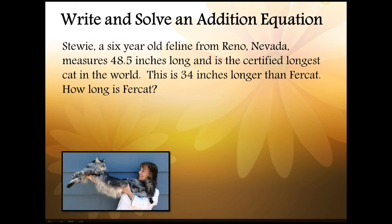Stewie, a six-year-old feline from Reno, Nevada measures 48.5 inches long and is the certified longest cat in the world. This is 34 inches longer than Fercat. How long is Fercat? We're setting up an addition equation so we know that we'll have a plus sign and an equal sign. The longest cat in the world is a lot longer than Fercat. We know that we have Fercat plus 34 more inches in order to equal the length of Stewie.